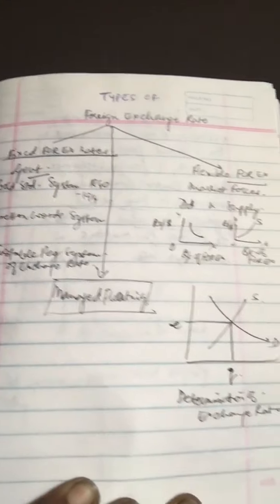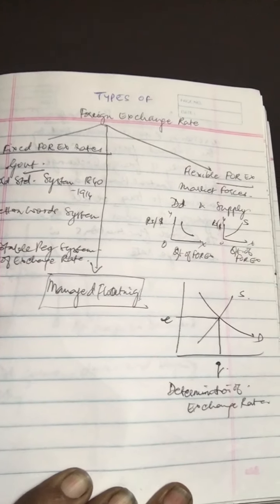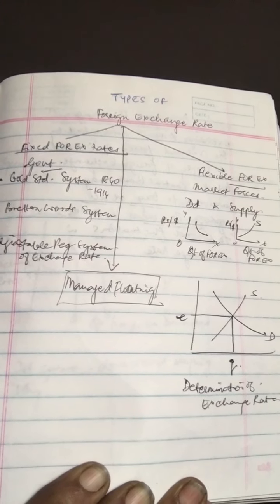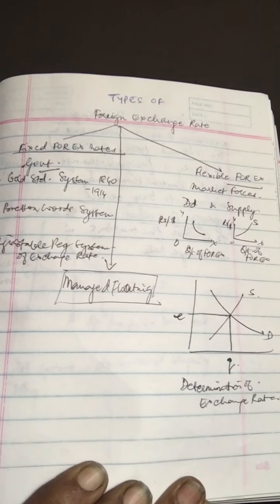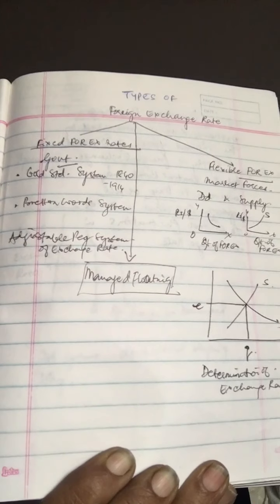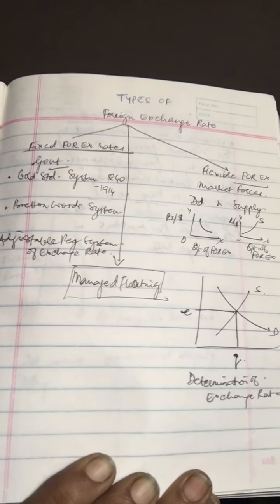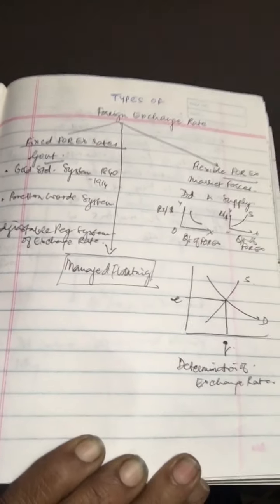Different countries have different methods of determining their currency exchange rate. It can be determined through flexible exchange rate, a fixed exchange rate, or managed floating exchange rate.